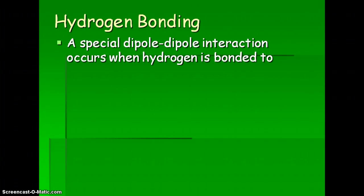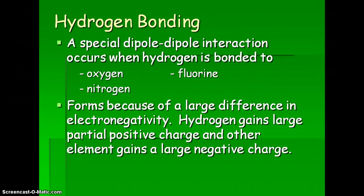Hydrogen bonding is a special type of dipole-dipole interaction. You have a polar molecule where hydrogen is bonded to one of three atoms: oxygen, nitrogen, or fluorine. These are special because there's such a large difference in electronegativity between hydrogen and each of these elements. Hydrogen gains a very large partial positive charge, and the other element — oxygen, fluorine, or nitrogen — gains a very large negative charge, resulting in a stronger attraction from one molecule to another, like a stronger magnet.